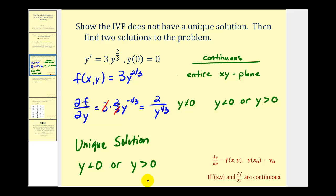But if we look at our initial condition, we have y(0) = 0. And since this y value is zero, that tells us that this initial value problem does not have a unique solution. Therefore, there must be at least two solutions. Let's go to the next slide and see if we can solve this and find two solutions.